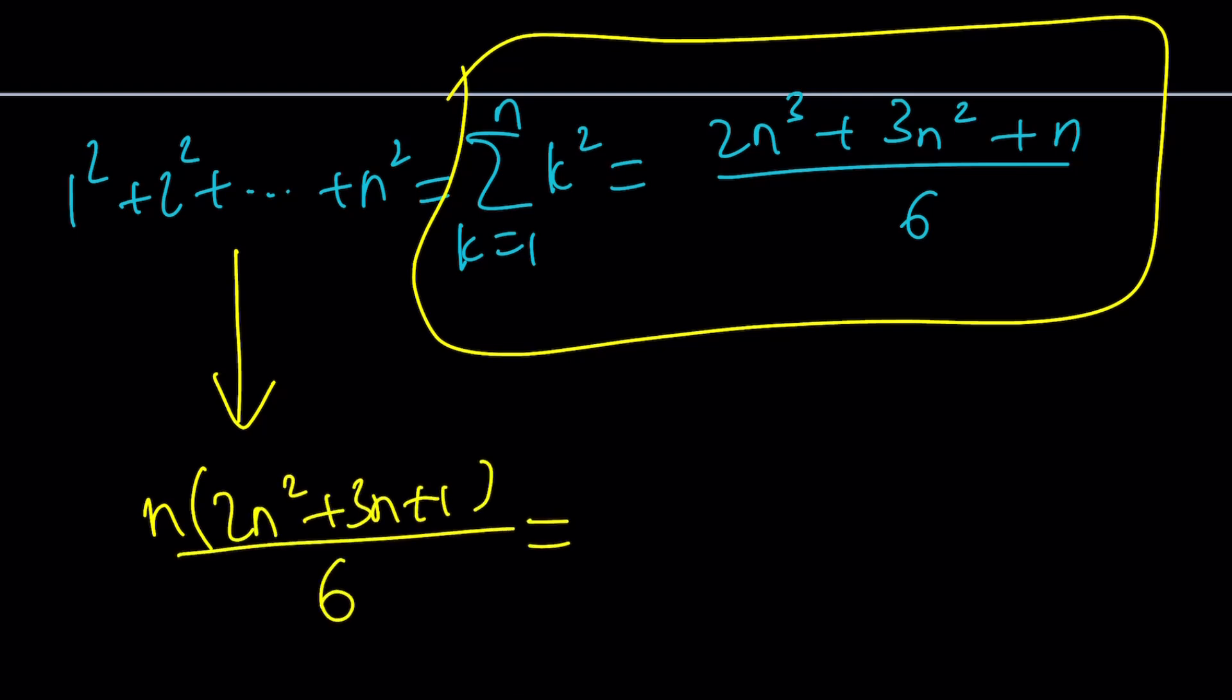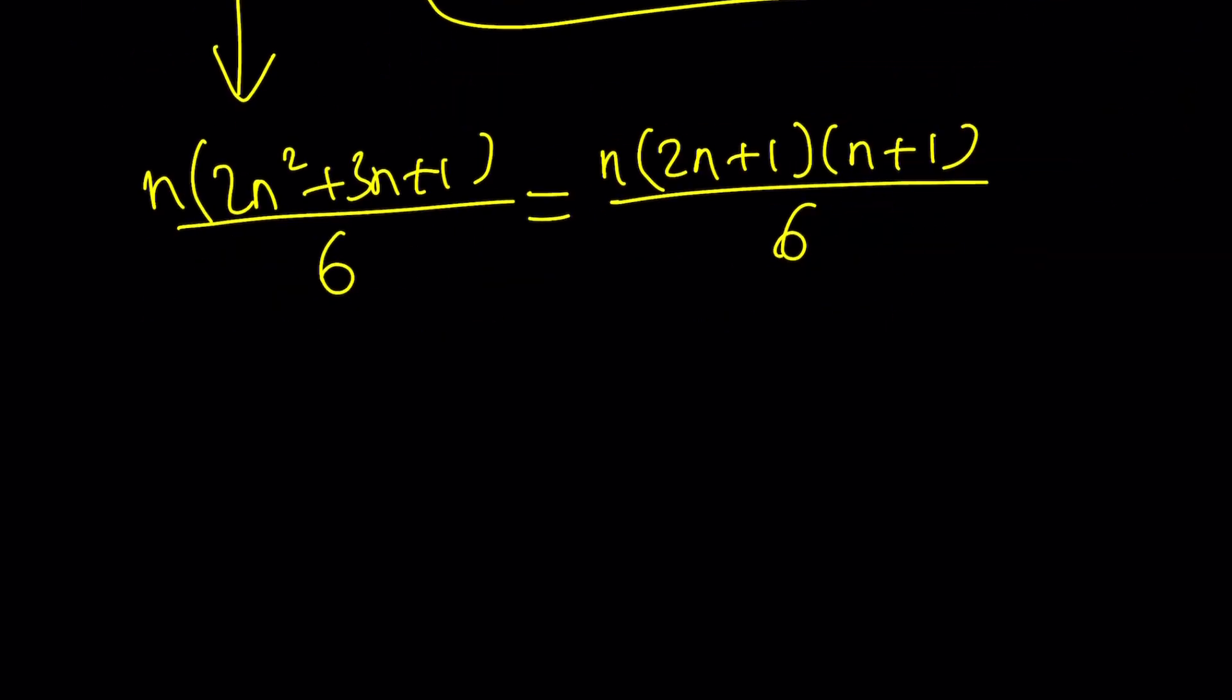And then this expression is also factorable. Notice that the sum of the evens is equal to the odds. So this can be written as 2n plus 1 times n plus 1. Remember, negative 1 is a solution. n times n plus 1 times 2n plus 1. It's usually written that way because the terms are kind of progressing that way. And here's the formula for the sum of squares. This was a long video, I know, but this is the formula I wanted to show you and I wanted to share with you.